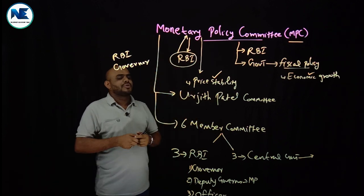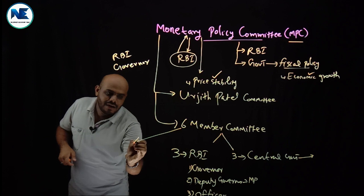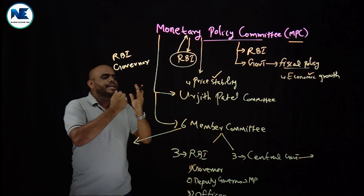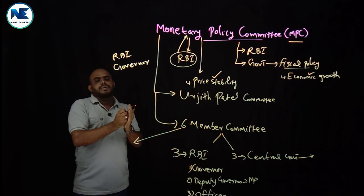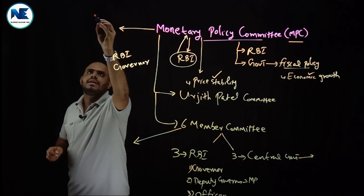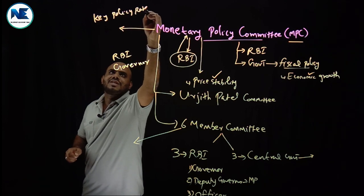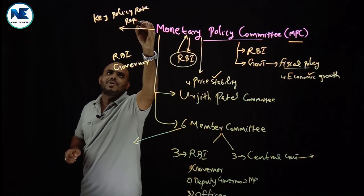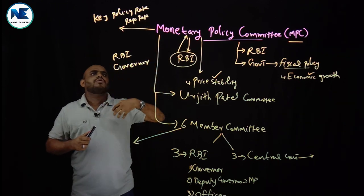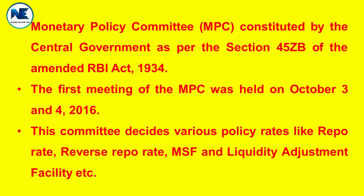Now, this is the Monetary Policy Committee. They hold meetings and the majority opinion becomes the monetary policy decision. The key policy rate they decide on is the repo rate - whether to increase the repo rate, decrease the repo rate, or keep the repo rate unchanged.